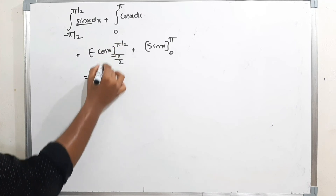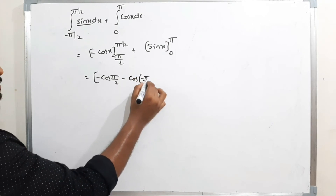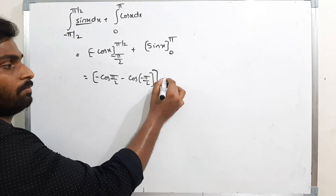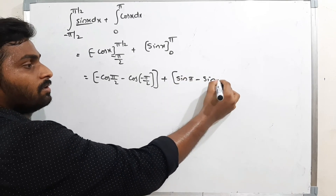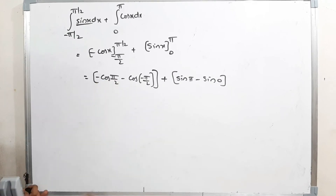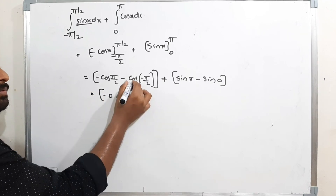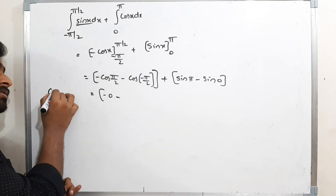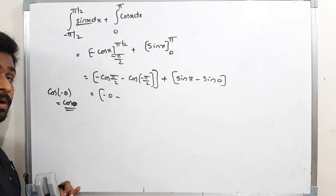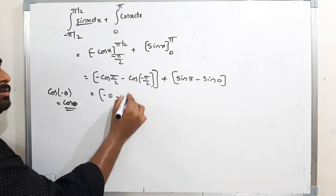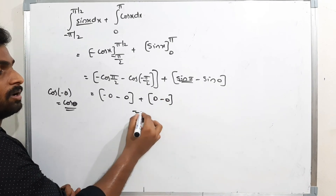Applying limits: [-cos(x)] from -π/2 to π/2 gives -cos(π/2) + cos(-π/2). Since cos(π/2) = 0 and cos(-π/2) = 0, this part is 0. For sin(x) from 0 to π: sin(π) - sin(0) = 0 - 0 = 0. So the total answer is 0.